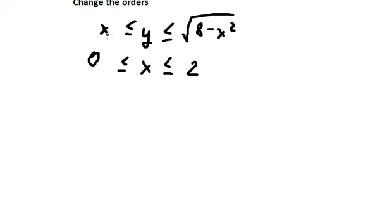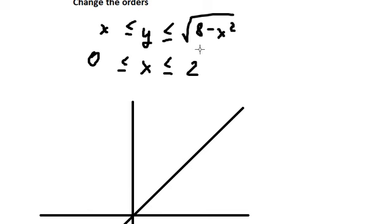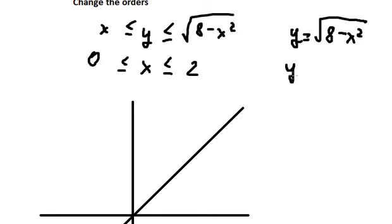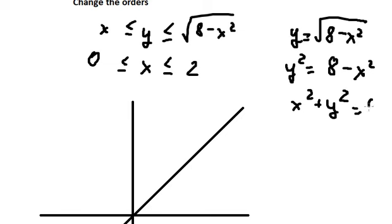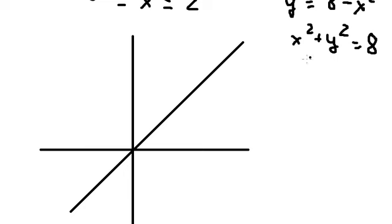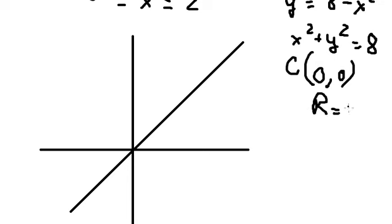Now we need to graph y equals to x, and the second one is the circle. We put the power of two for both sides to remove the square root. This gives us a circle centered at the origin with radius the square root of 8, which is two times the square root of two, and we draw the circle here.